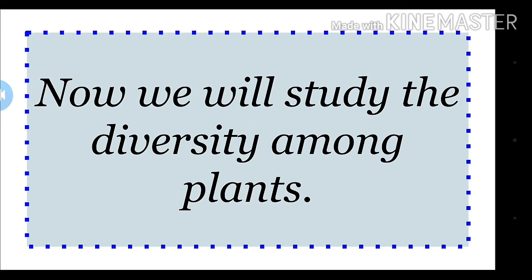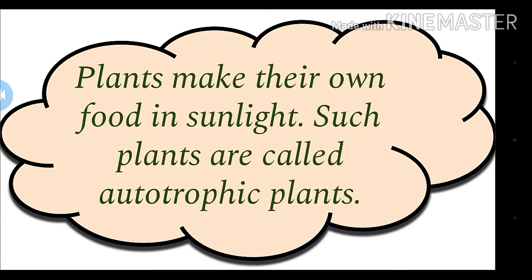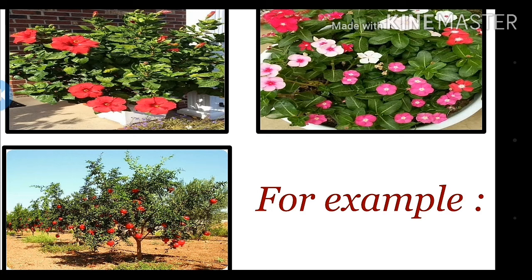The first type is autotrophic plants. What are autotrophic plants? Plants that make their own food in sunlight are called autotrophic plants. All plants that perform photosynthesis using sunlight and other elements are called autotrophic plants. These are almost the normal types of plants. For example, the hibiscus plant, the periwinkle plant, the promorganic plant, and many more.